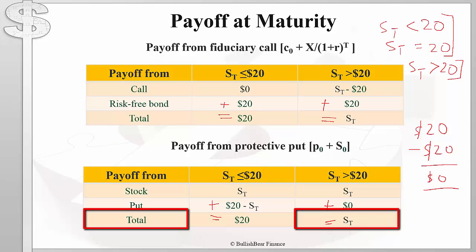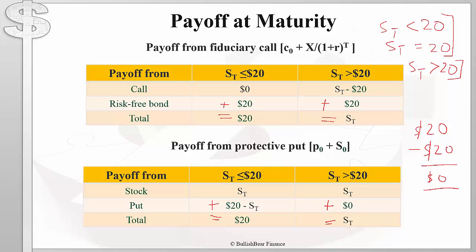What is the cash outflow? The stock price is simply whatever it happens to be. The put expires worthless, and therefore the total cash outflow is simply the stock price. Therefore, when the stock price is more than $20, the total net cash outflow is $0.